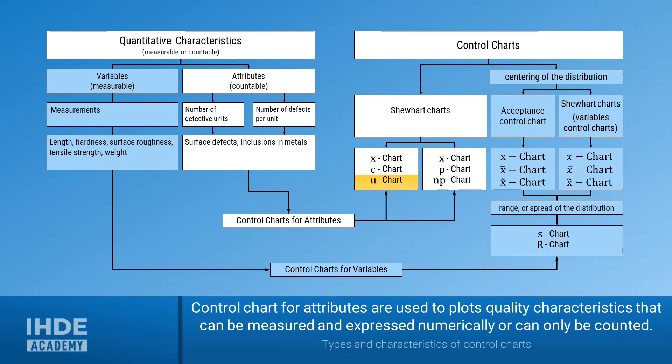On the right side, we have the different control charts for attributive characteristics with a white and yellow background. As you can see, there are six control charts for attributive characteristics. As already mentioned, this is about the U-chart for the number of non-conformities per unit.